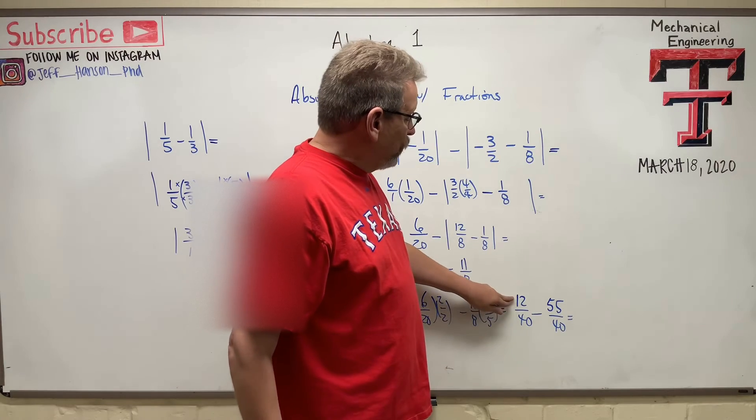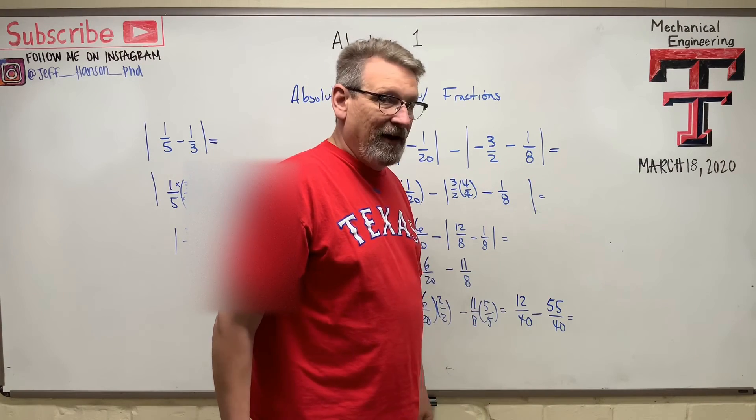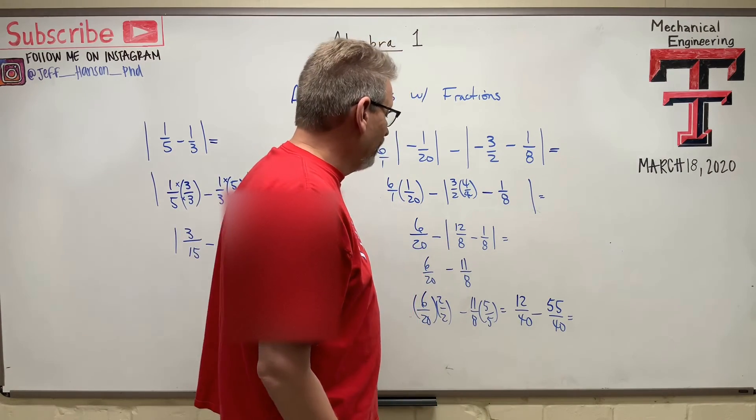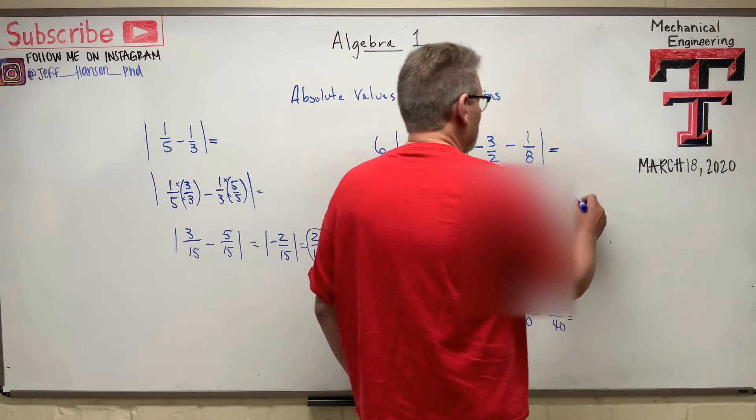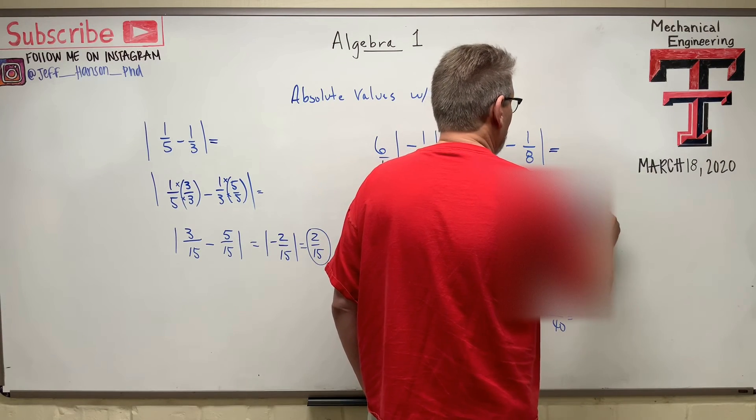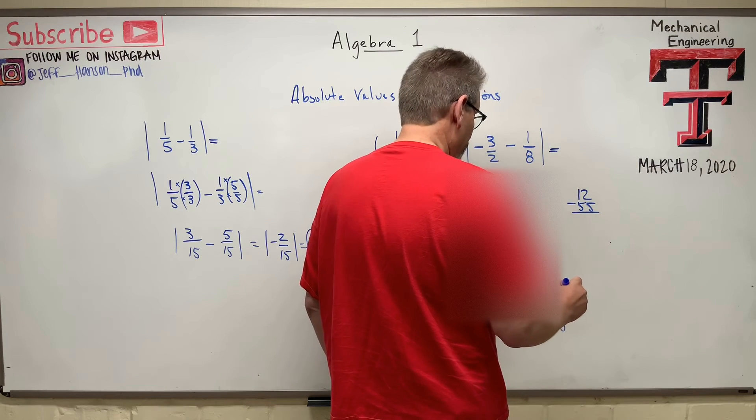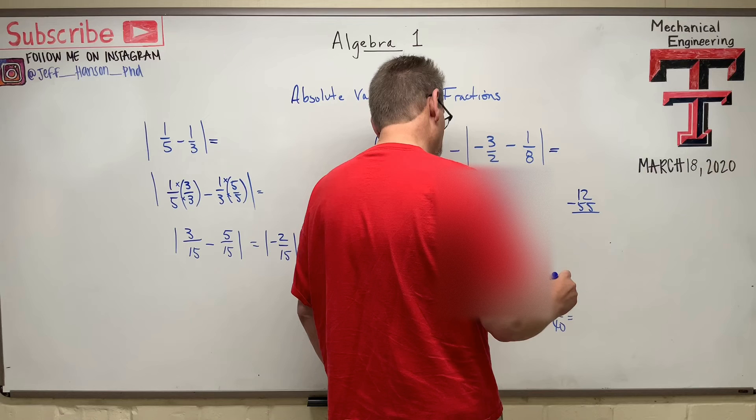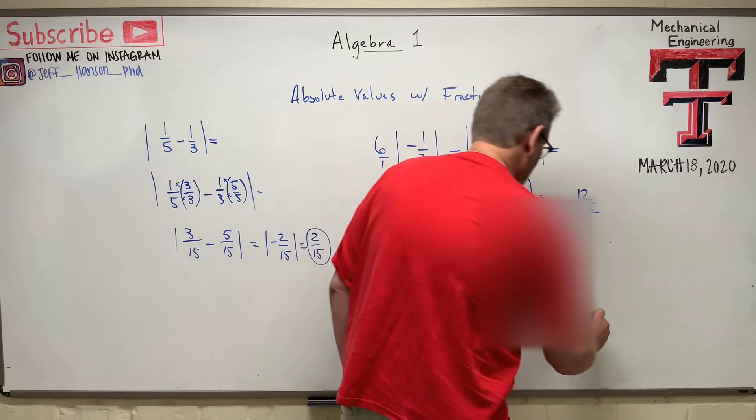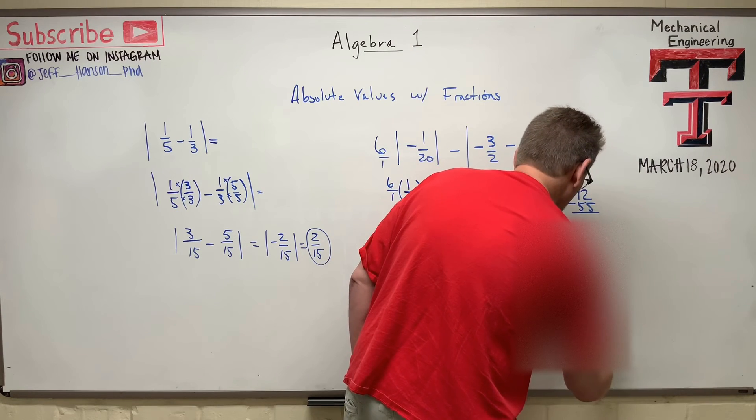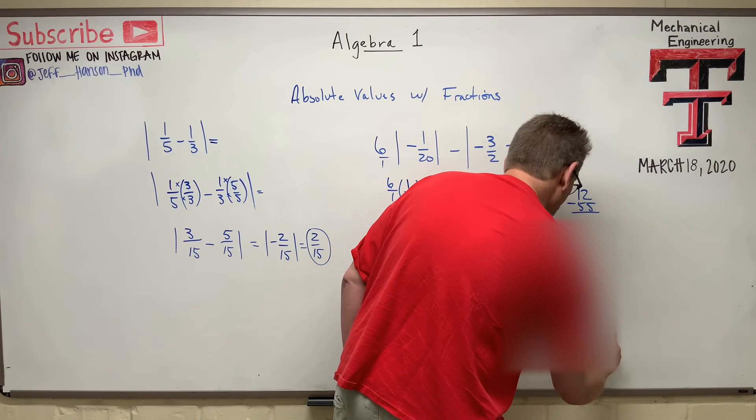And then we have to do this. 12 minus 55. 12 minus 55, is going to be what? 43 to the negative.